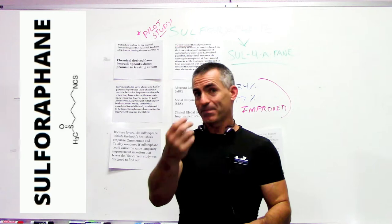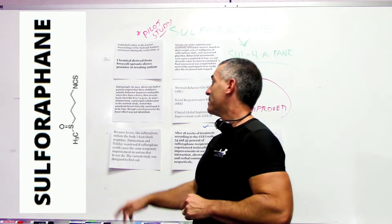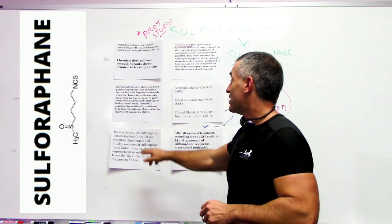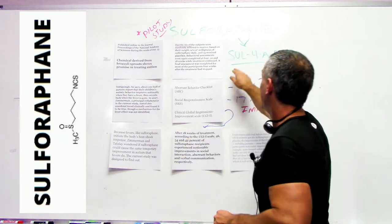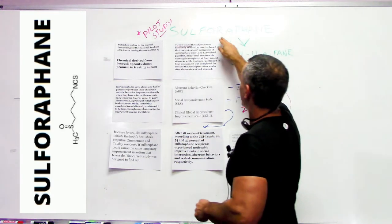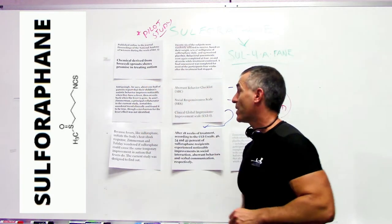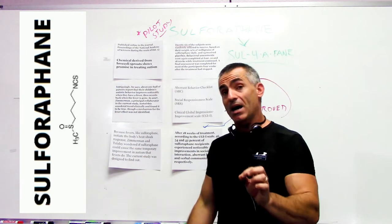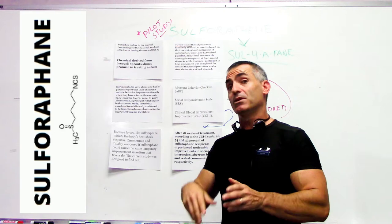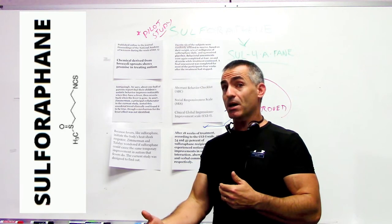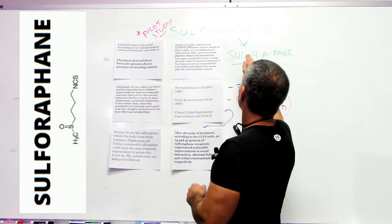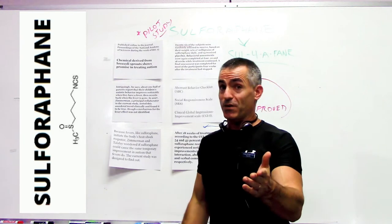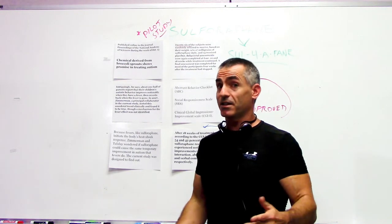Well, this is where it led. Because fevers, like sulforaphane derived from broccoli sprouts, initiate the body's heat shock response. You see the connection? Fevers initiate the body's heat shock response. So does sulforaphane, obviously without giving you a fever, otherwise you'd be eating broccoli and getting sick all the time.